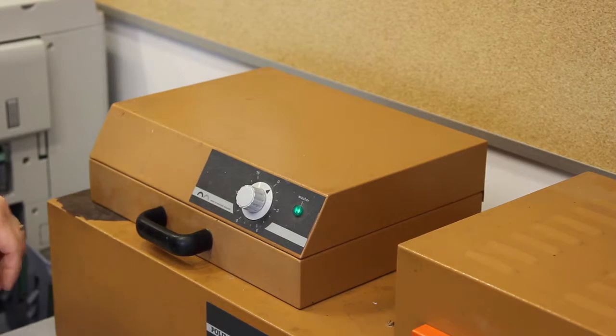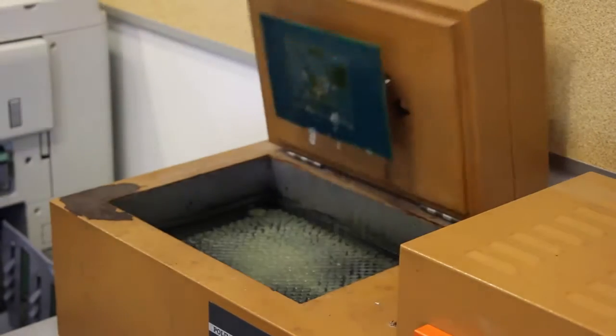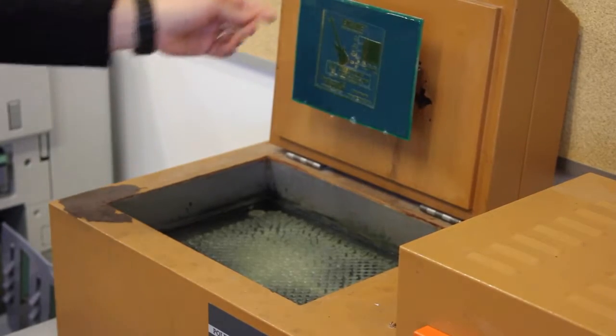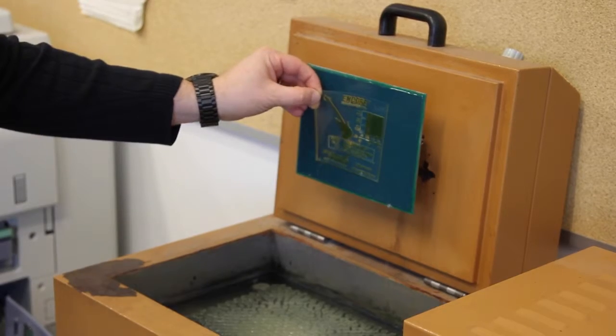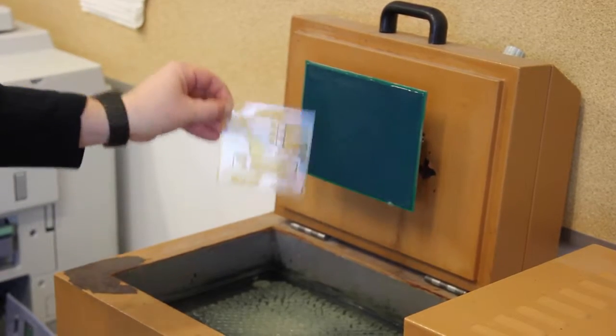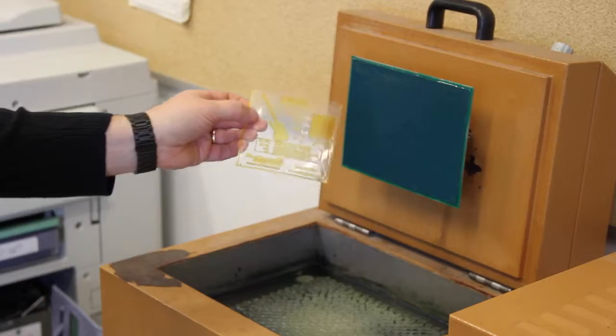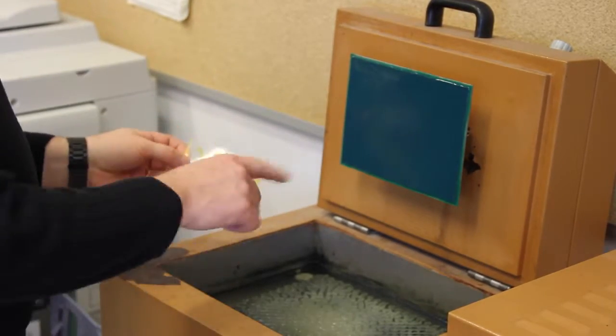The wash is just about done now. We'll wait for the timer to go off and once it's done then we can open up the lid and we can see that our polymer has for the most part washed clean where it wasn't exposed and where it was exposed is still present and visible.